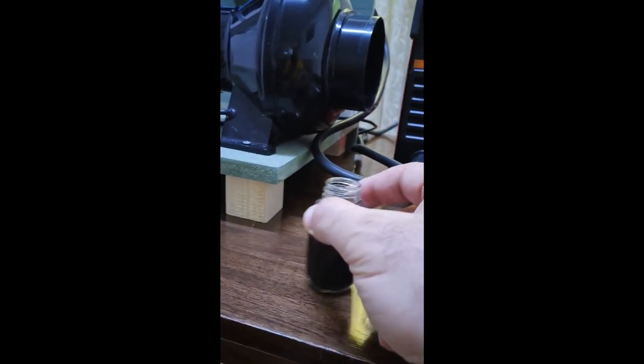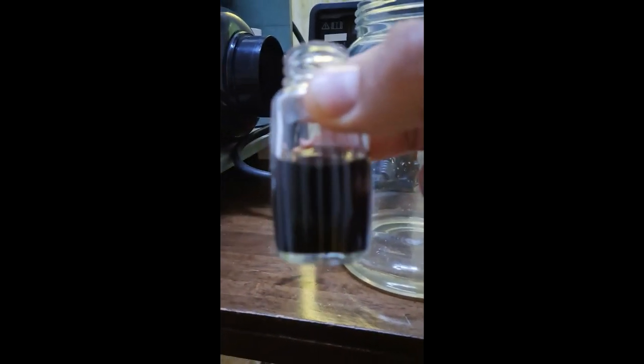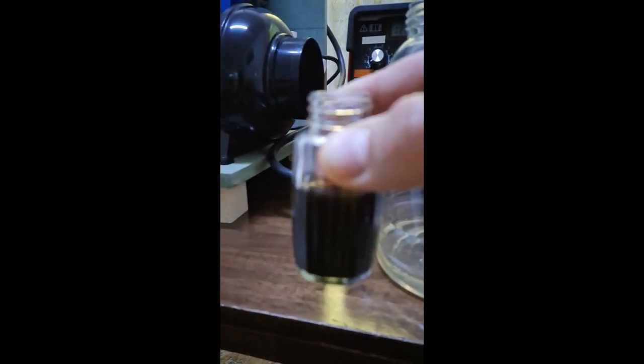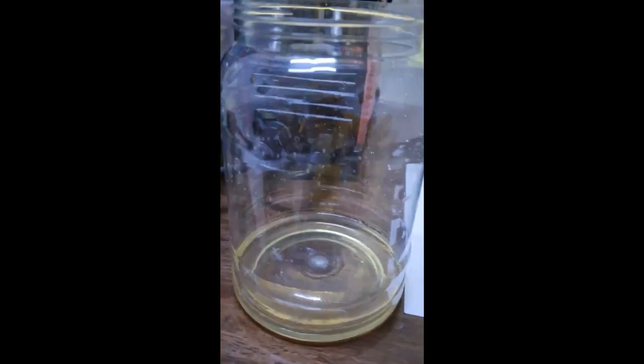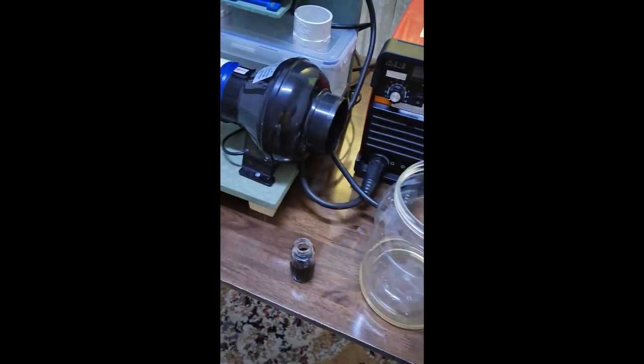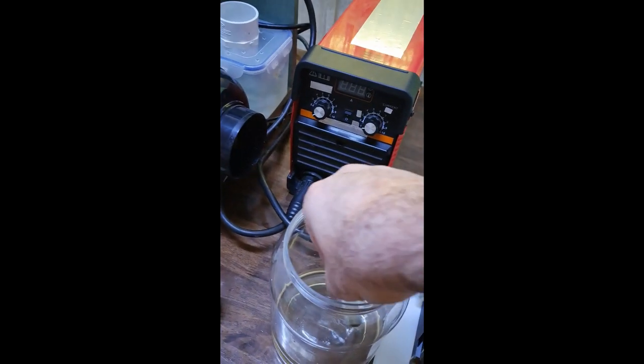Now what we have here is an iodine solution with starch as indicator, and the color of the solution is blue. And now we'll take one sample of the produced sodium hypochlorite and we'll titrate it with the solution. So let's see.